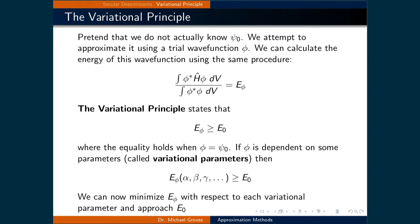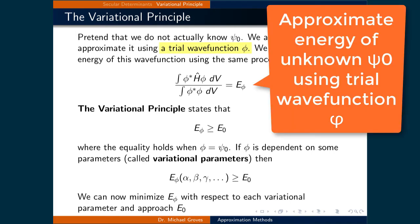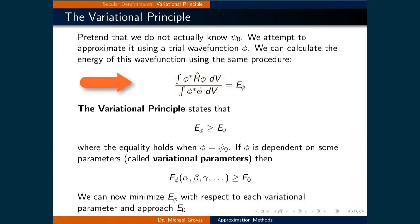Now, pretend that we do not actually know the ground state wave function psi0. We can instead attempt to approximate it using a trial wave function, which we will call phi. We can calculate the energy of this wave function phi using the same procedure as before, meaning the energy of phi equals the integral of phi-star times the Hamiltonian times phi dv, over the integral of phi-star times phi dv.